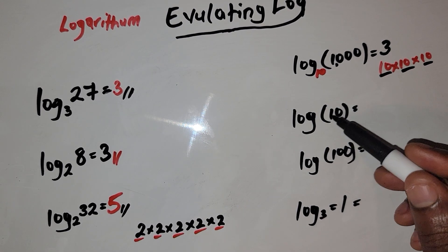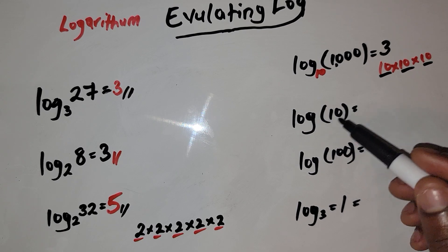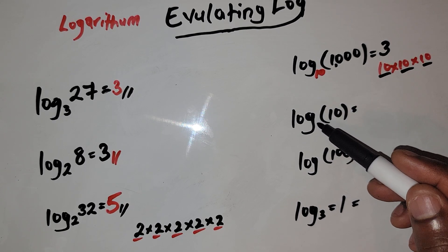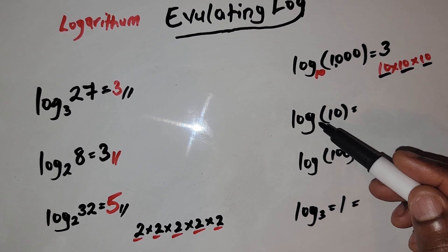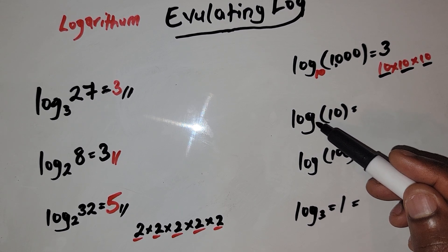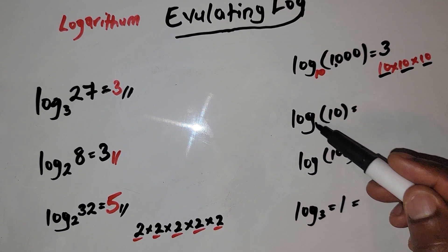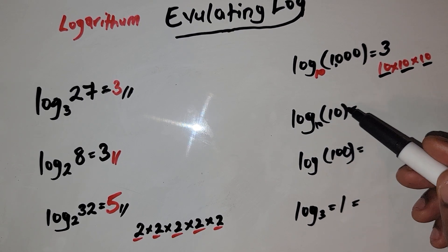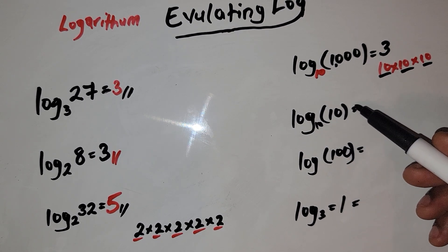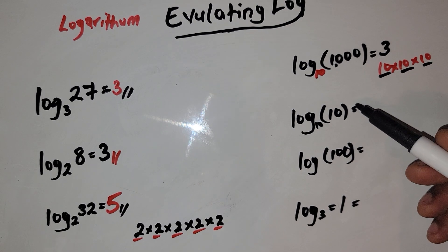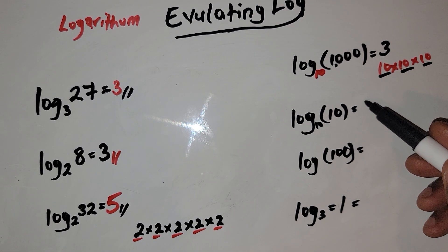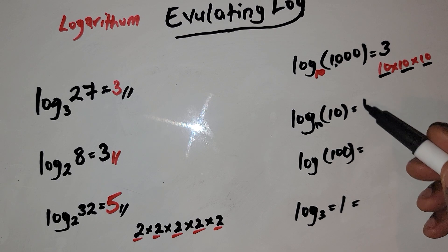The same thing applies to log of 10. Once you don't have a base here it is assumed to be an imaginary 10. So we want to say: 10 raised to what power gives you 10? Basically 10 raised to the 1st power, so the answer here is going to be 1.